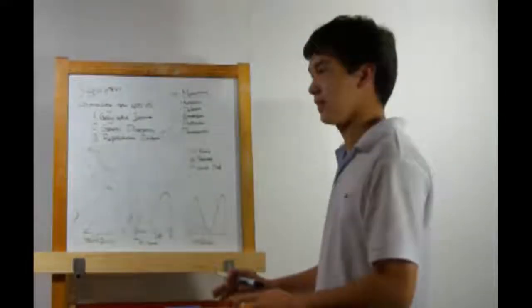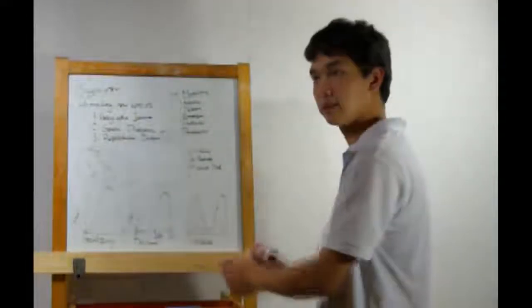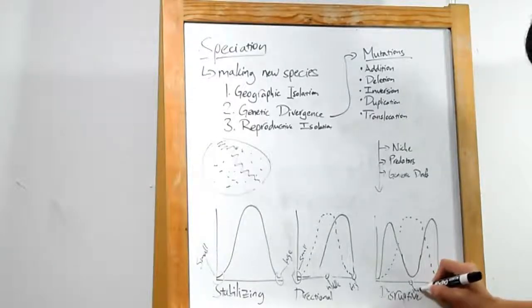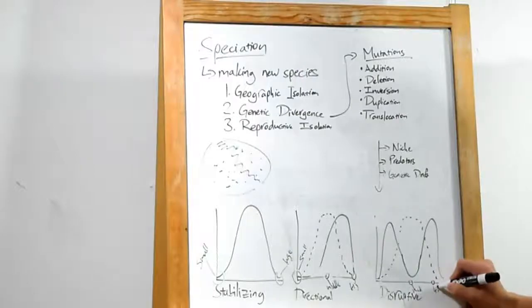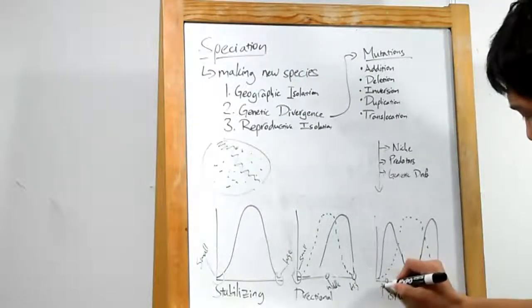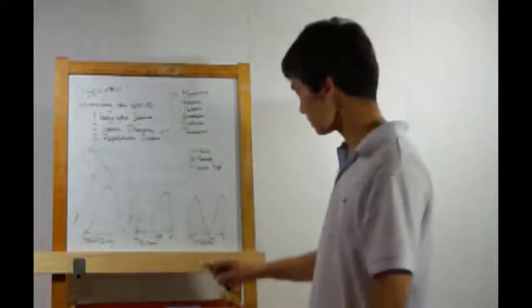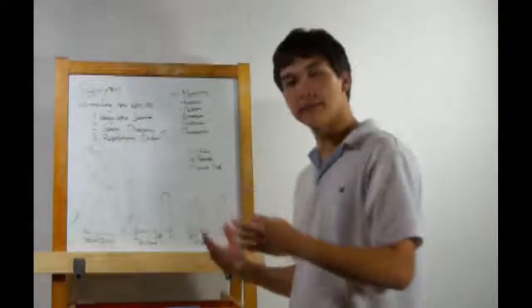Finally, there's disruptive selection. This is towards both extremes and away from the middle. In this particular case, the medium birds are mostly dead, but there are a lot of big beaks birds and a lot of little beaks birds. Disruptive selection, away from the center in both directions. And that's genetic divergence.